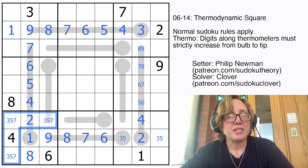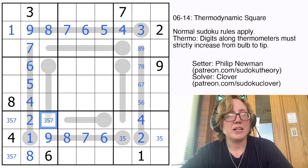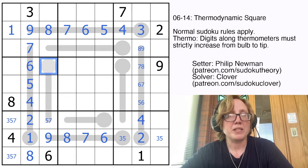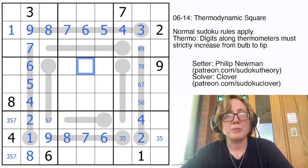Okay, now these will be 3, 5, and 7 in some order. This can't be a 3 because it is the last cell on a length 4 thermometer, and we can't start the thermometer with anything smaller than 1. So there we go.